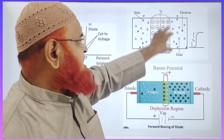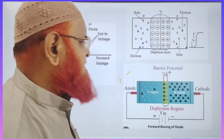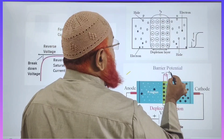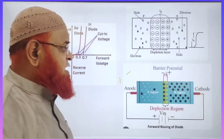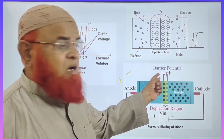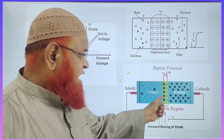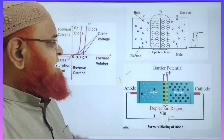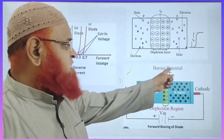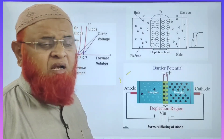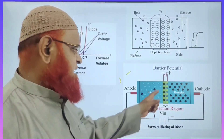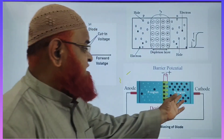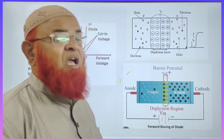Only positive ions are present here, negative ions are present here. These positive ions are acting like a positive terminal of a battery. These negative ions are acting like a negative terminal of a battery. And hence, it is called as a potential barrier or barrier potential. This barrier potential does not allow the further movement of electrons and holes.